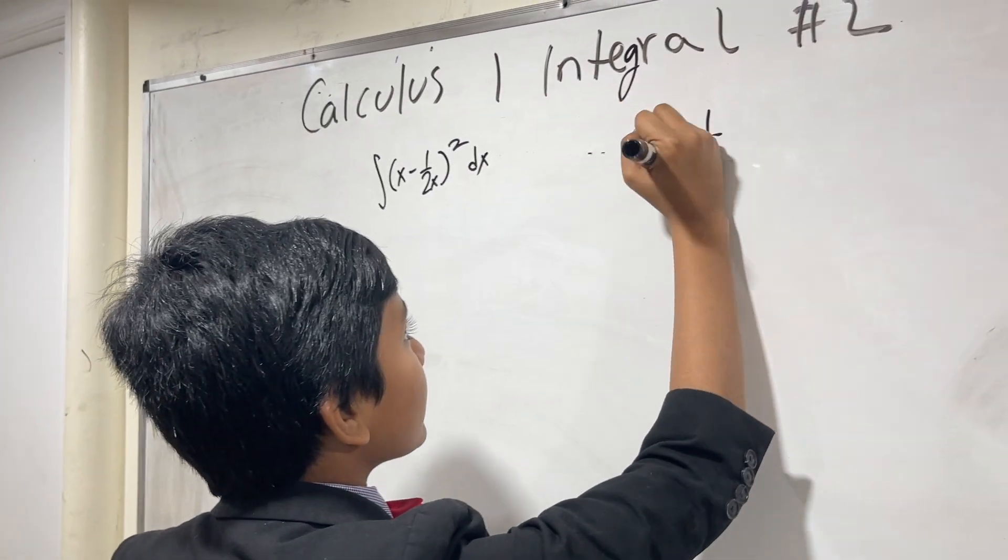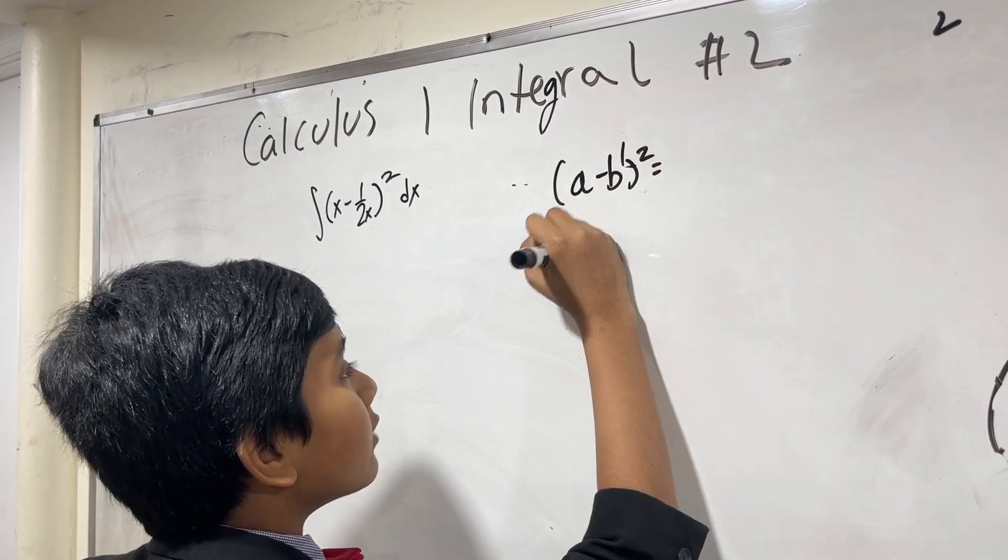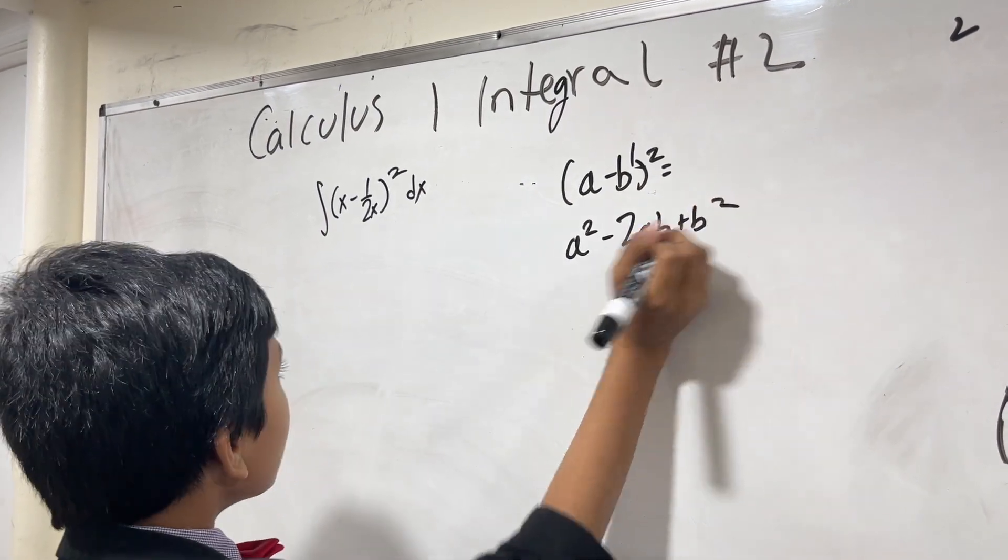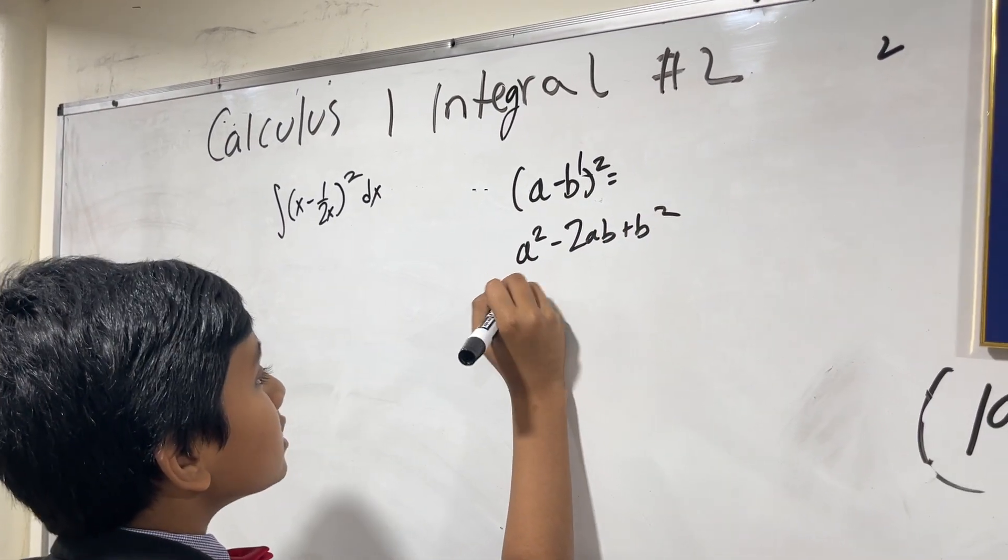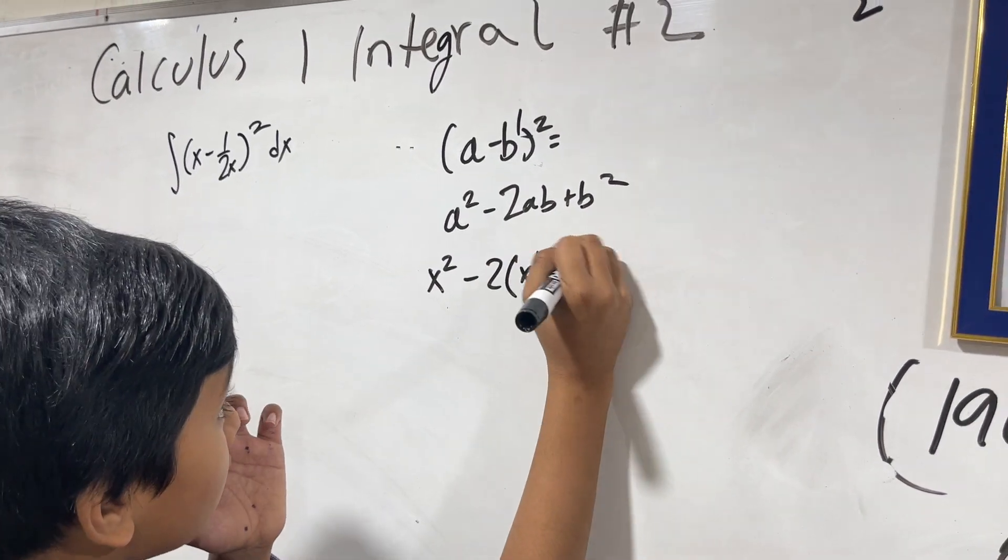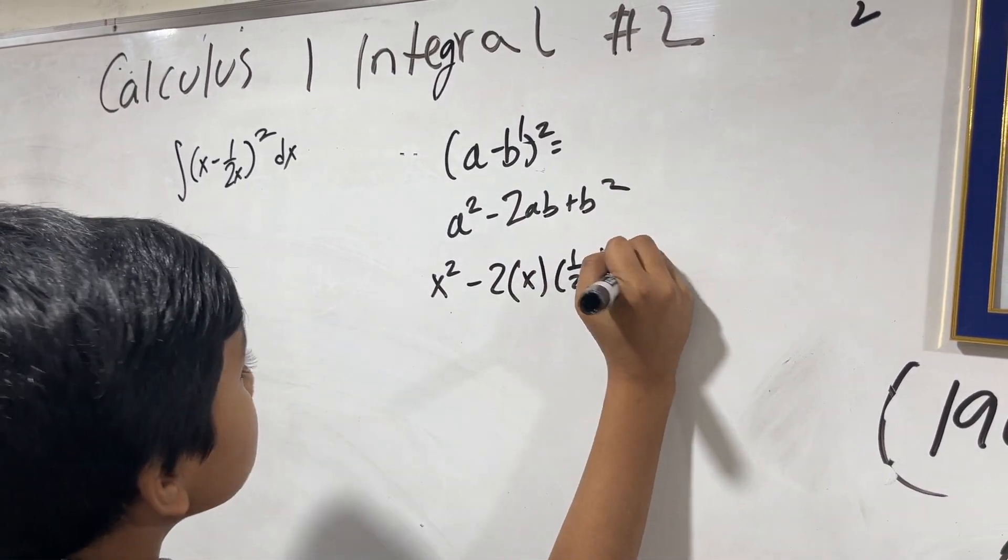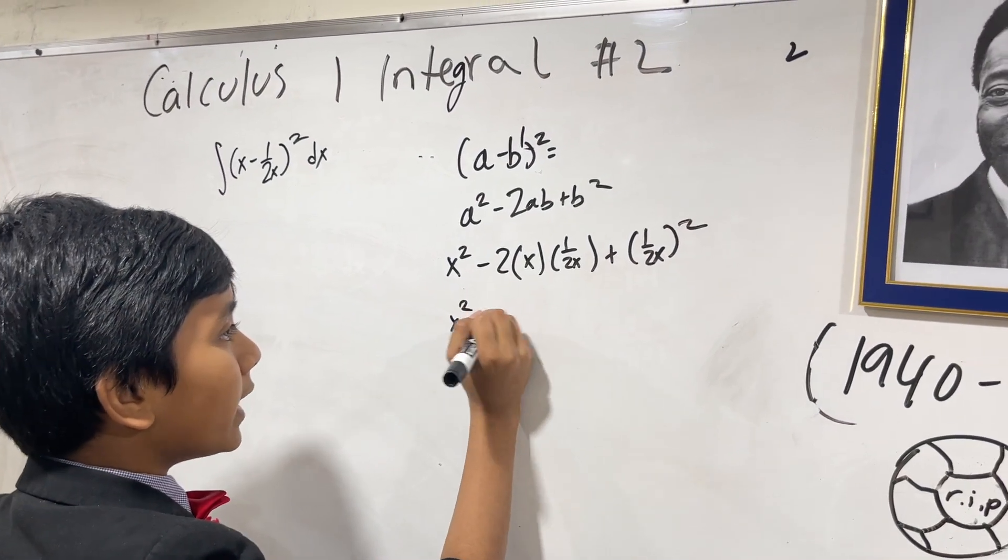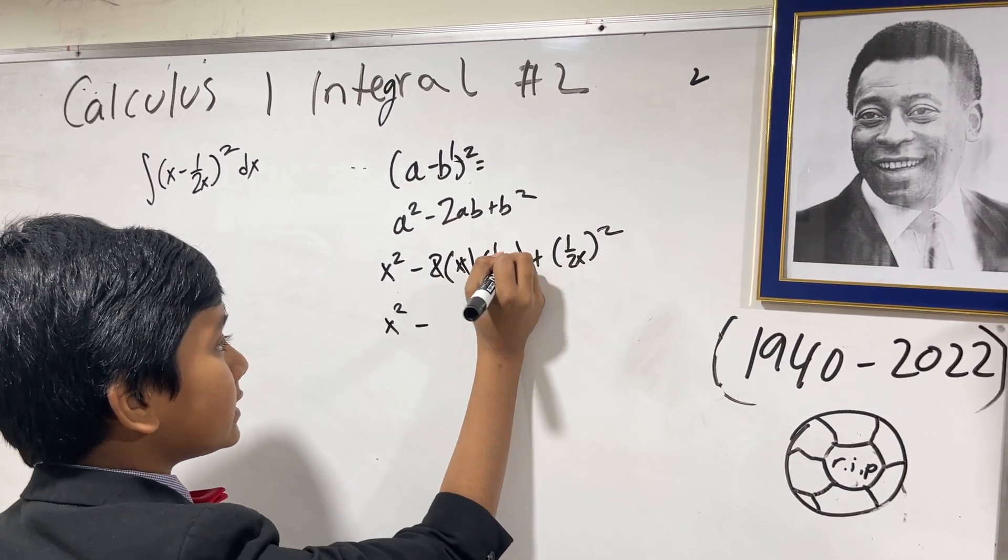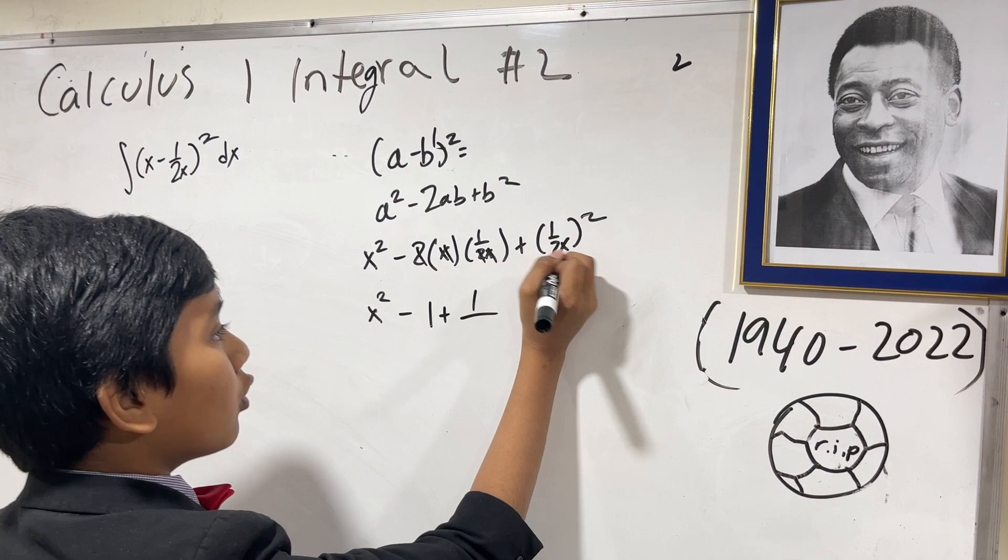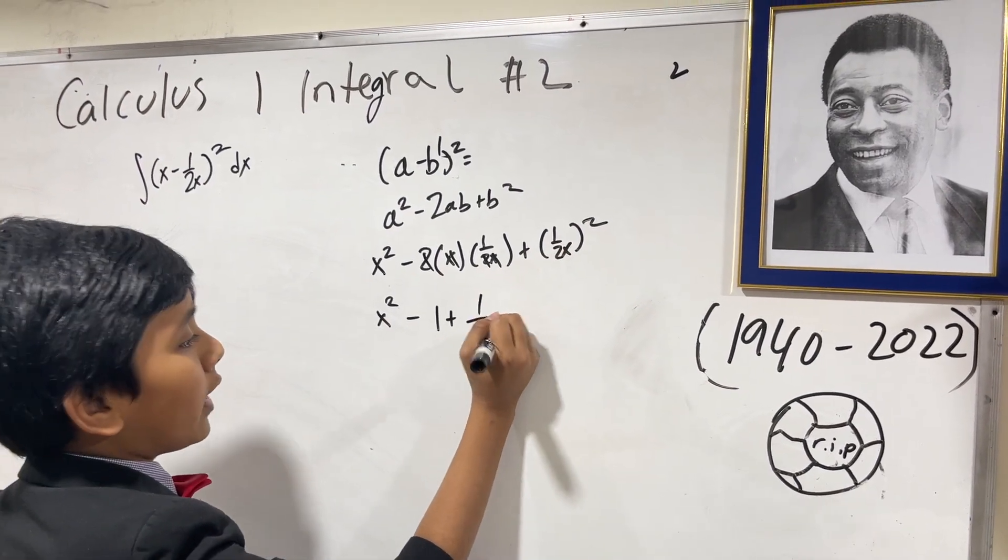We know that a minus b squared is equal to a squared minus 2ab plus b squared. So that becomes x squared minus 2 times x times 1 over 2x plus 1 over 2x squared. That's x squared minus these cancel out and these cancel out, so 1, plus 1 over the whole squared of 2x, so 4x squared.